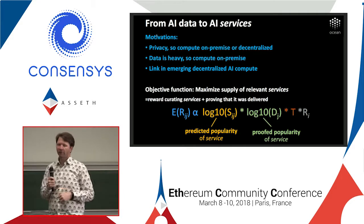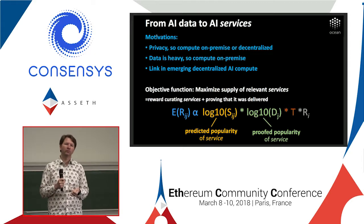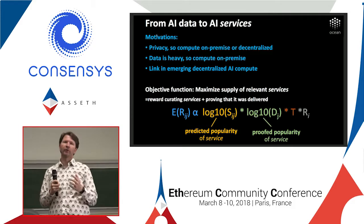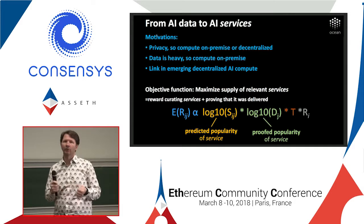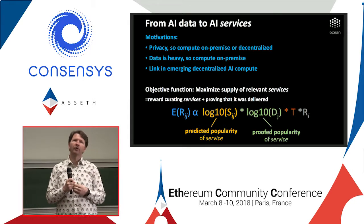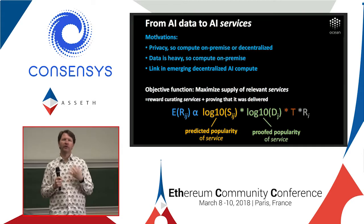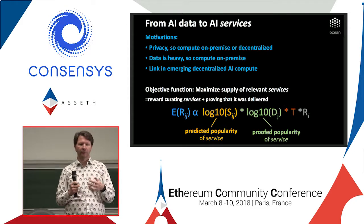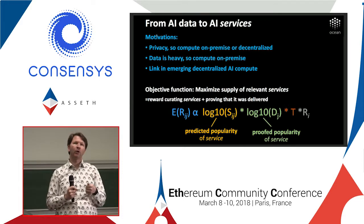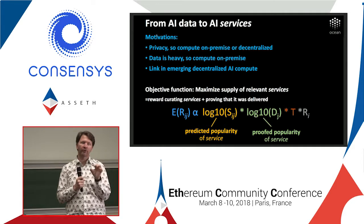We had one more constraint: privacy. For certain problems, the only way to address privacy properly is on-premise compute. Also, a lot of data is super heavy — a petabyte or more — and you really don't want to move it, which is another reason for on-premise compute. We also realized there are many emerging networks out there for data and compute, and we asked: is there a way to hook into that and grow together as an ecosystem? We realized we could generalize from maximizing supply of relevant data to relevant services, which includes data and compute — tuned towards AI. The objective function simply changes from predicted popularity of data to predicted popularity of the service, and same for proofed popularity. Since we have proofs for not just data but for compute, we could leverage those patterns.